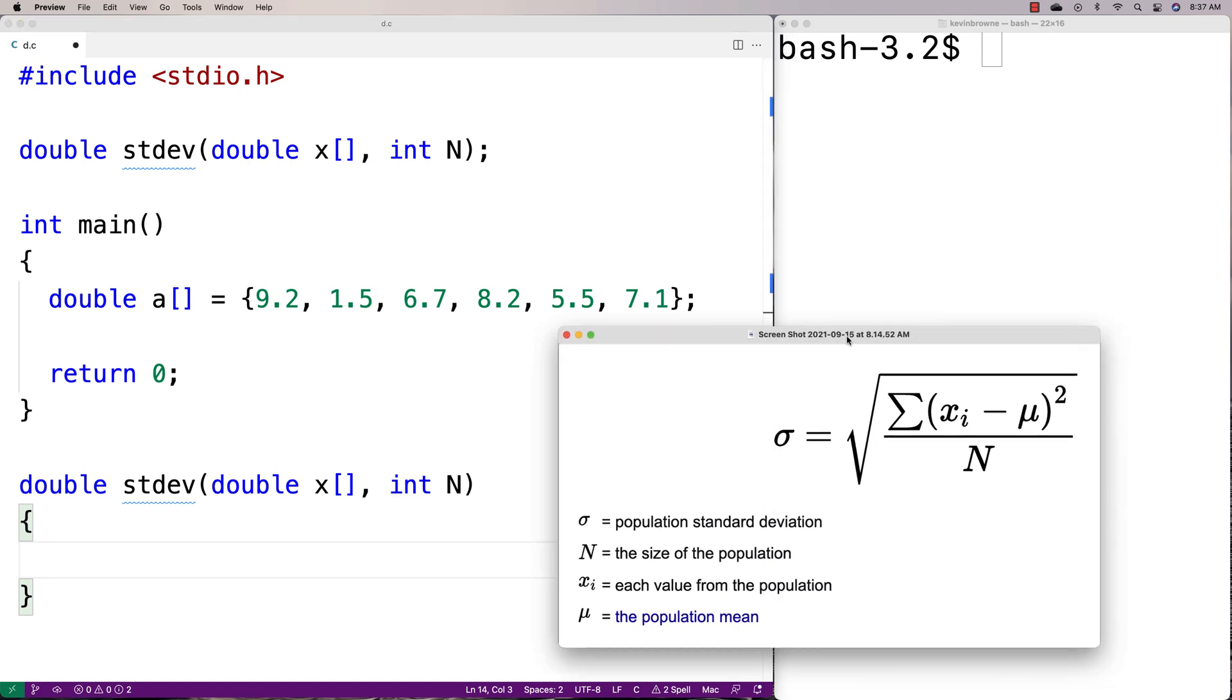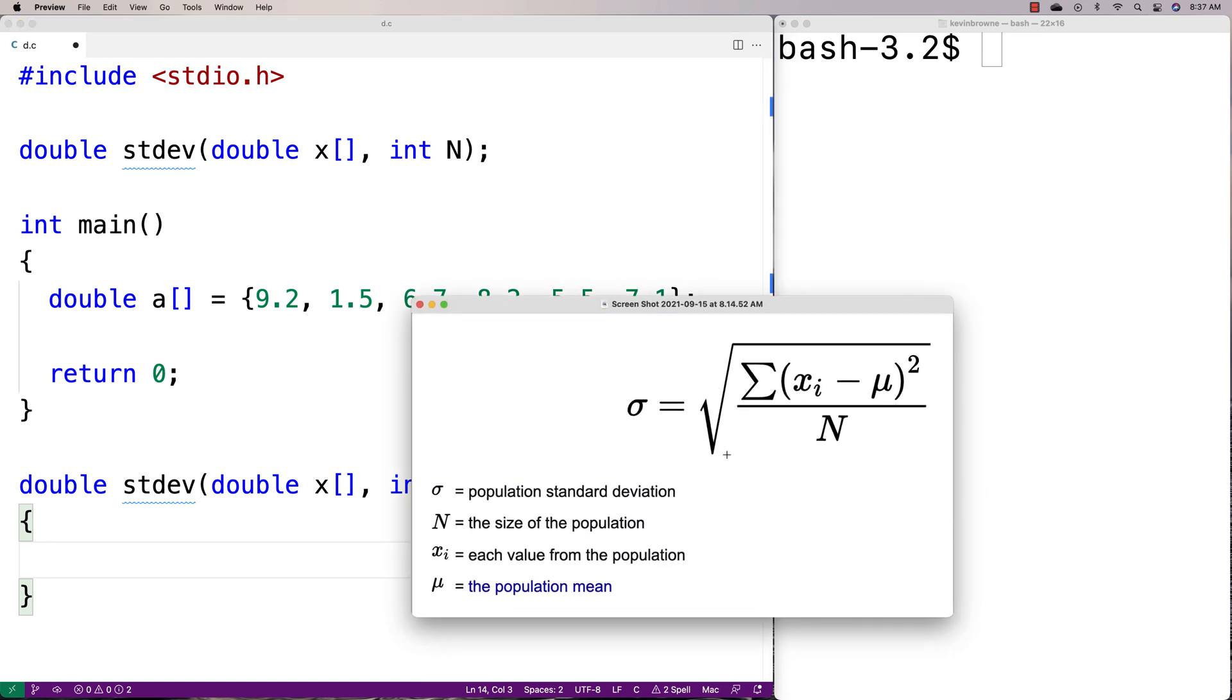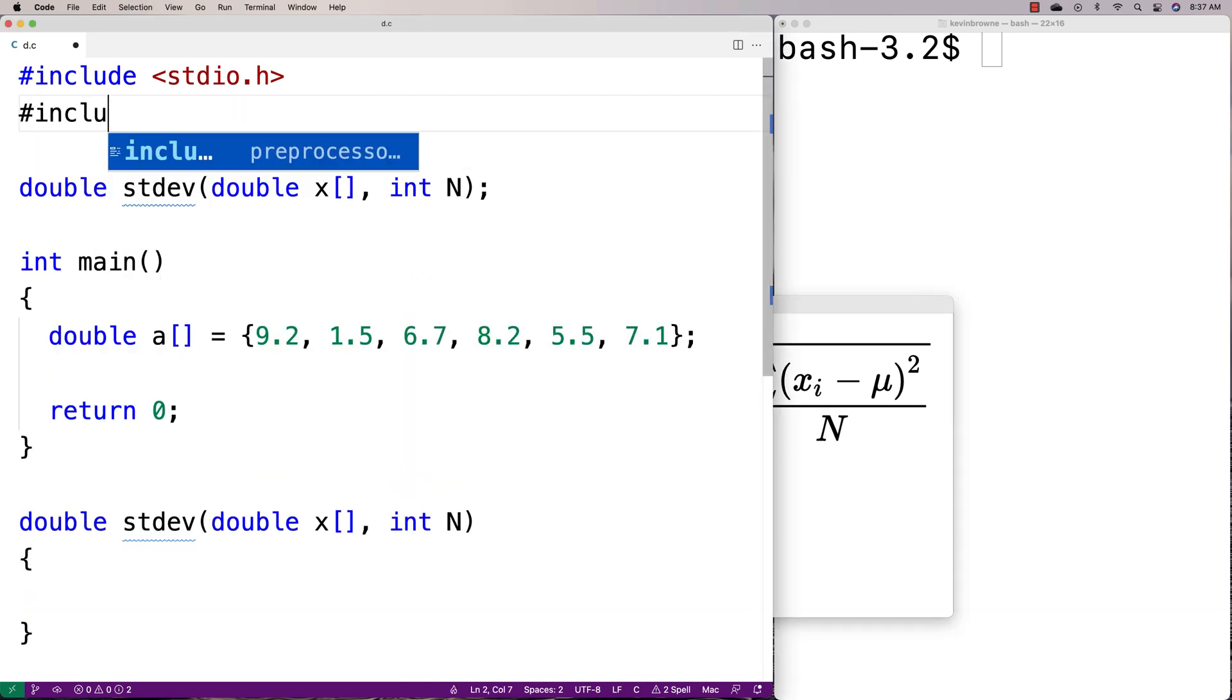When we compute the standard deviation, we'll need to include the math library. We're going to take this number to the power of 2 and also do a square root operation. Those are two functionalities we can get with the math library, so we'll include math.h to access those.